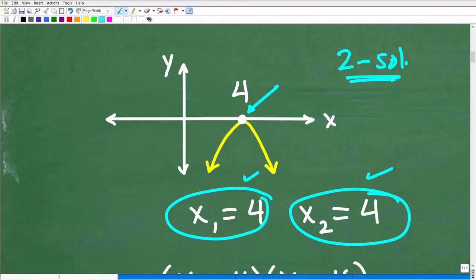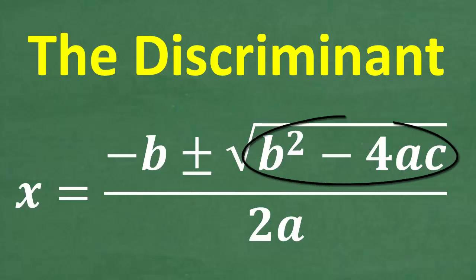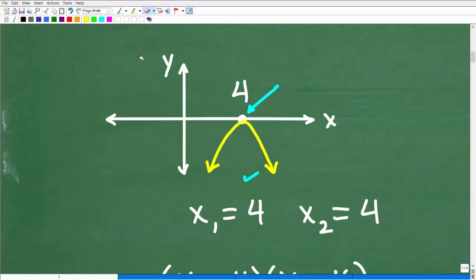You really need to know the different types of roots and even how to determine them using something called the discriminant, which is a part of the quadratic formula. I love talking about this stuff because there's so many different connections you can make between graphs, quadratic equations, quadratic formula. This is really important stuff. What we're dealing with here is a double root. This graph is pointing downward, and we need to know something about what causes a parabola to be downward and not upward.